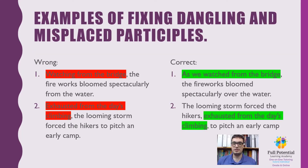Here are some more sentences to help us better understand dangling and misplaced participles. We see a dangling participle in the first sentence below: 'Watching from the bridge, the fireworks bloom spectacularly from the water.' This doesn't add up because it sounds like the fireworks were watching themselves from the bridge, so another addition must be made. 'As we watched from the bridge, the fireworks bloom spectacularly from the water.' This makes more sense because the subject 'we' is clearly viewing the fireworks. That was a dangling participle.